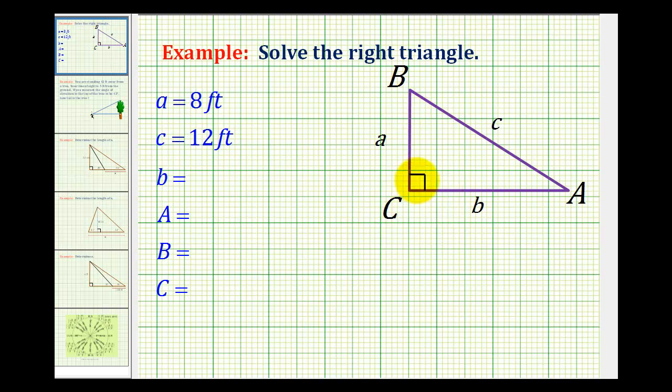Since we're given a right triangle, we know the measure of angle C is equal to 90 degrees. Let's also label the given information. The length of side a is 8 feet and the length of side c is 12 feet.